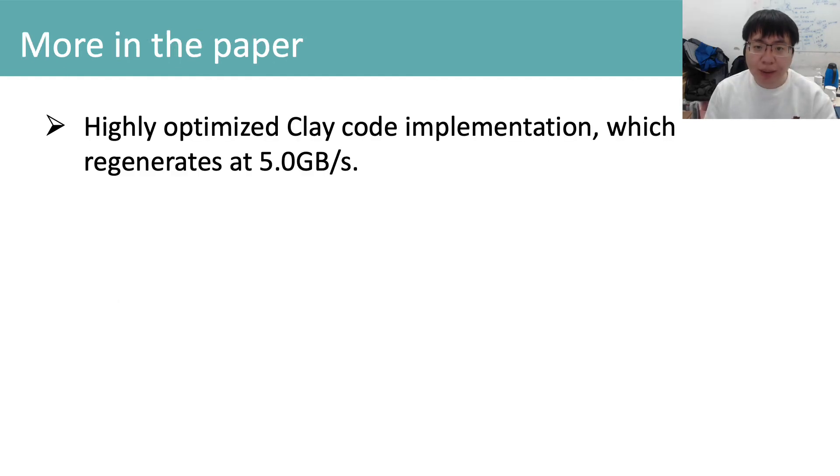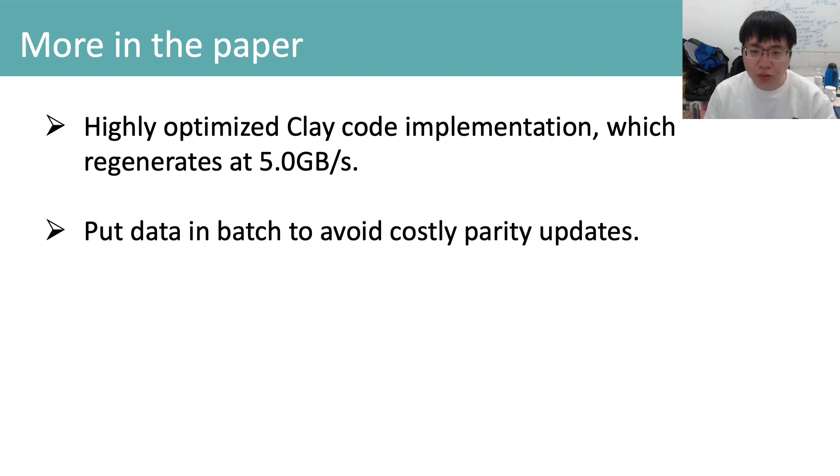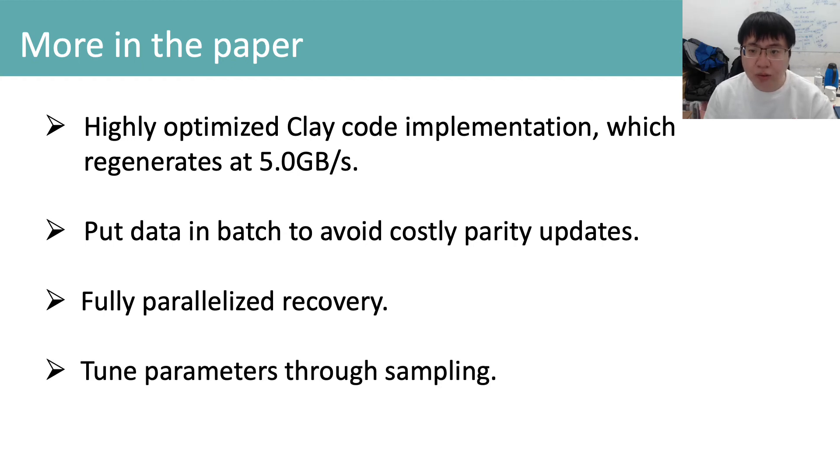To implement geometric partitioning, we use our highly optimized clay code implementation, which regenerates at 5 Gbps. We put data in a batch to avoid costly parity updates. We support fully parallelized code recovery so that recovery can be done as fast as possible. The parameters for geometric partitioning are tuned by sampling and searching. We support range access by reading related chunks and discarding unnecessary data from these chunks. The details are in the paper.